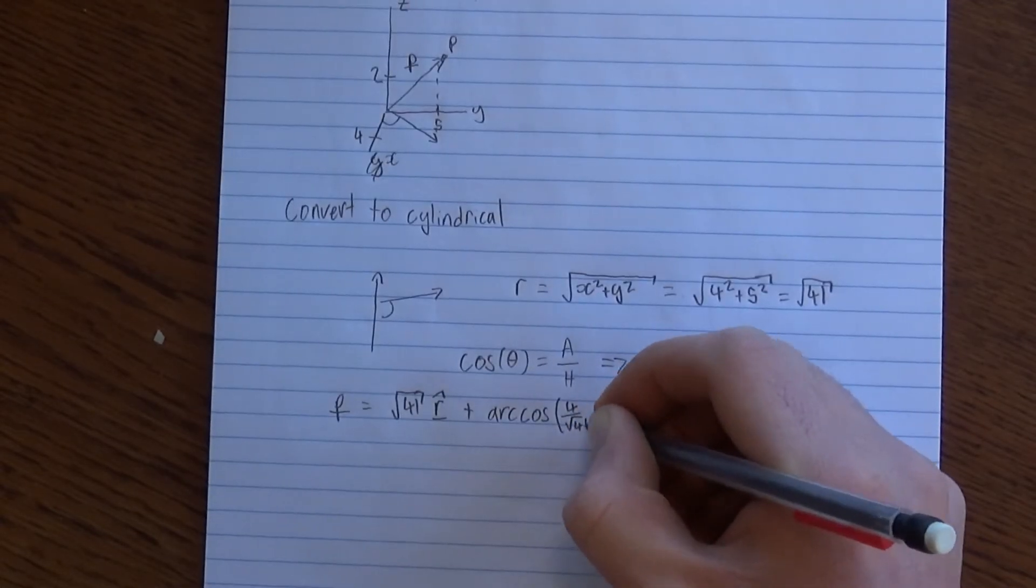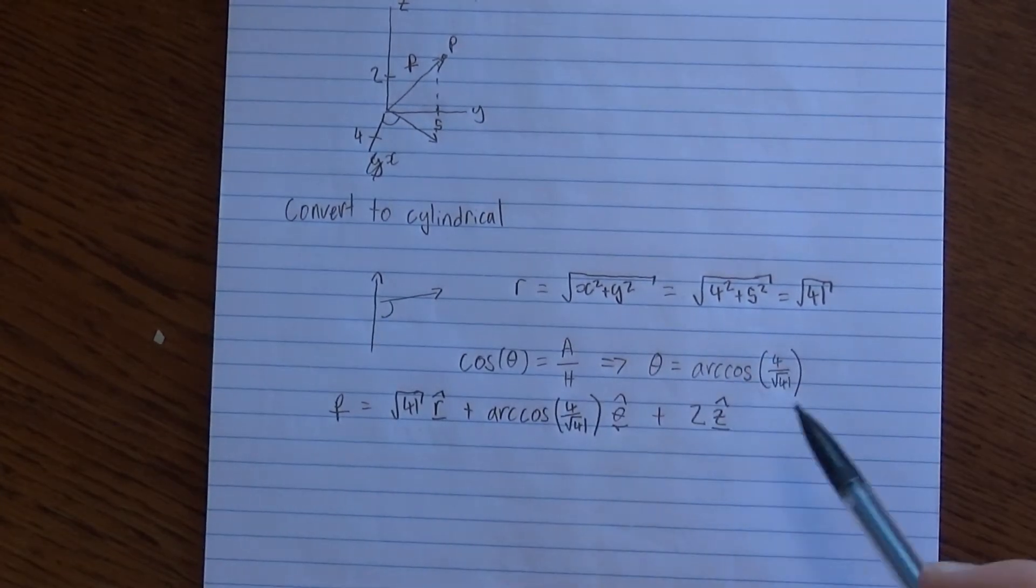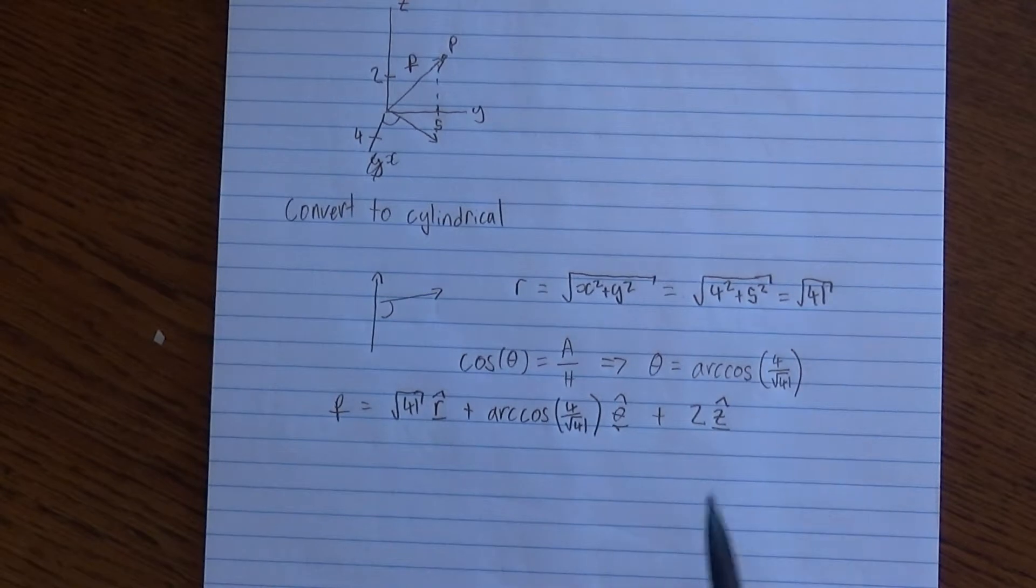So we now get P in cylindrical coordinates is equal to root 41 r hat plus arc cos 4 over root 41 theta hat plus 2 z hat. Where the hatted vectors are equal to unit vector, i.e. a vector of magnitude 1 in their respective directions.